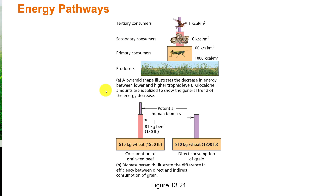Kilocalorie is a scientific term for the same thing you see on your food packaging called a calorie. A calorie is a measure of energy, strictly defined as the amount of energy necessary to raise one gram of water one degree Celsius. It's very familiar to most humans as the energy we need for activity and bodily functions. A kilocalorie is really the scientific term for what we commonly call a calorie.